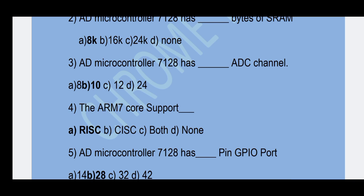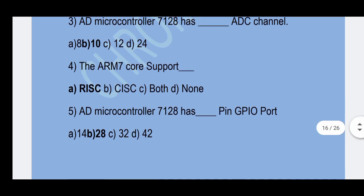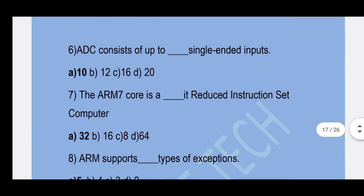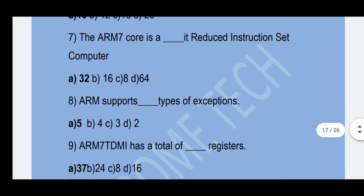Fourth question: The ARM7 core is a RISC (Reduced Instruction Set Computer) architecture. Option A — 32-bit is the correct answer.